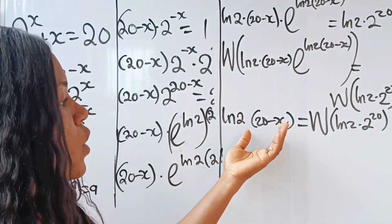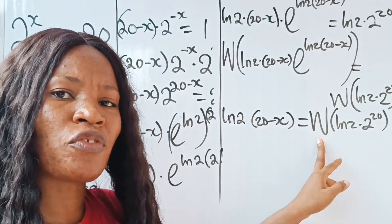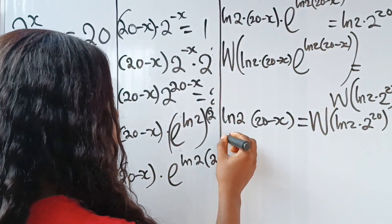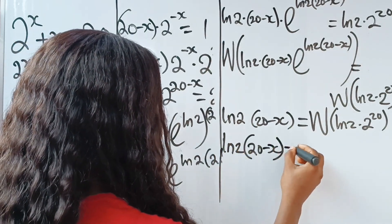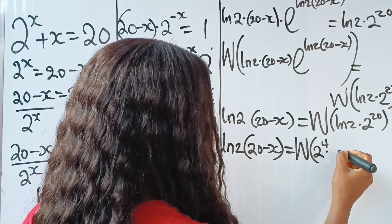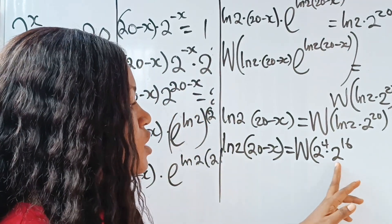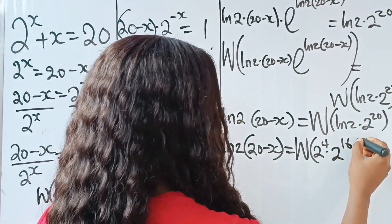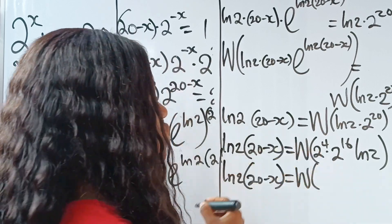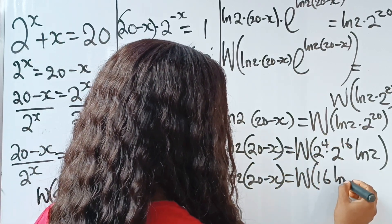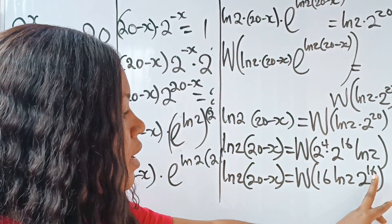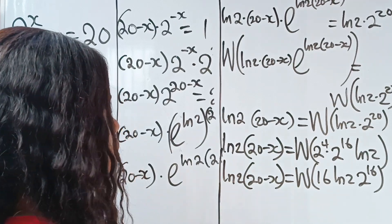Now we need to simplify the right side. We have ln(2) and 2 to the power of 20. We rewrite 2 to the power of 20 as 2 to the power of 4 multiplied by 2 to the power of 16, because we can add the powers since we have the same base. So we have ln(2) · (20 minus x) equal to W of [2^4 · 2^16 · ln(2)]. Now 2 to the power of 4 is 16, so this becomes W of [16 · ln(2) · 2^16], and we are trying to form the matching structure inside the W function.